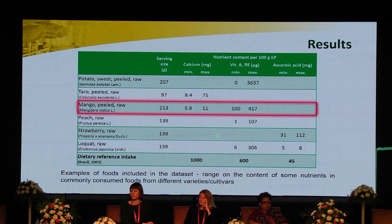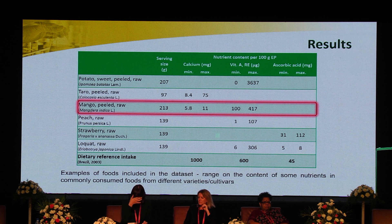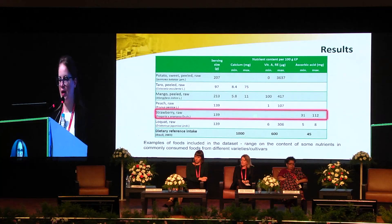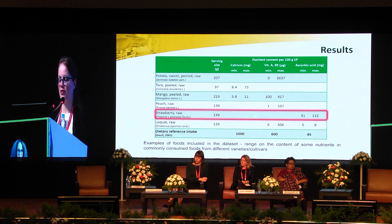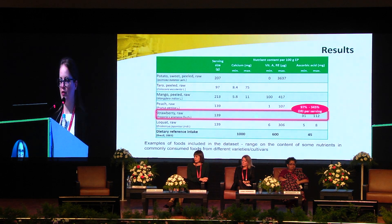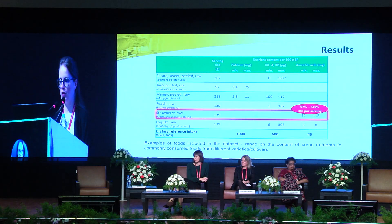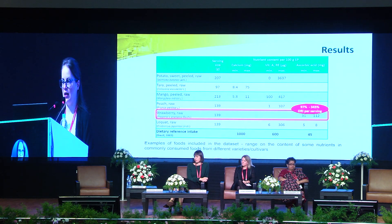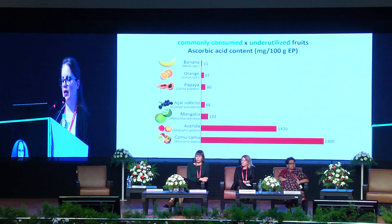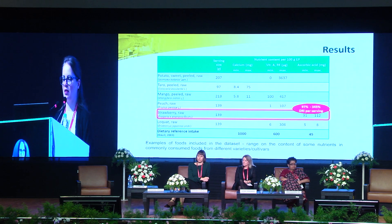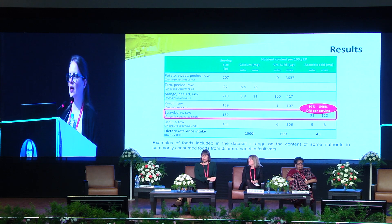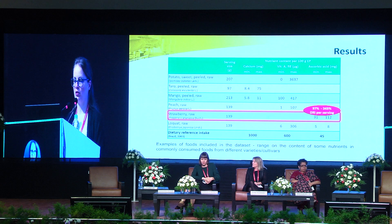When we look at different varieties of mango — even though mango is considered a good source of vitamin A — we also have a wide range in ascorbic acid content, from 31 to 112, representing almost 100% to 345% of the DRI per serving. We can see that even for commonly consumed foods, there can be a big change in nutrient content depending on the cultivar or variety.